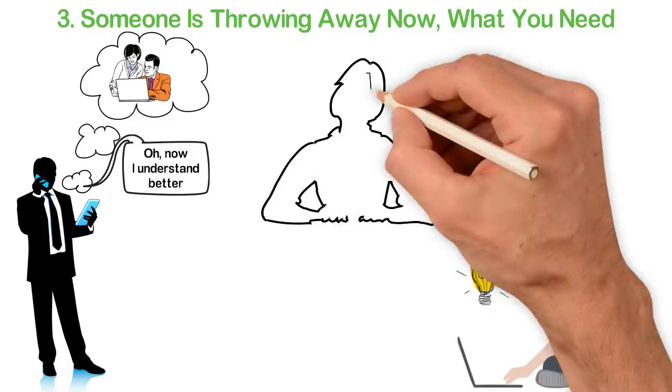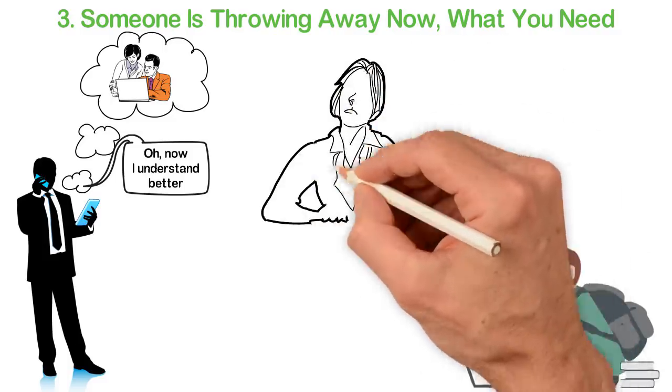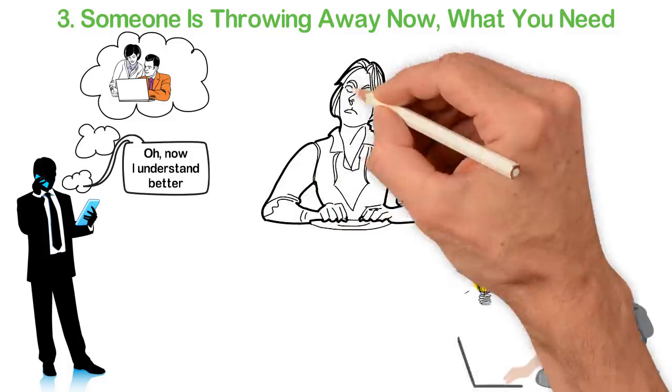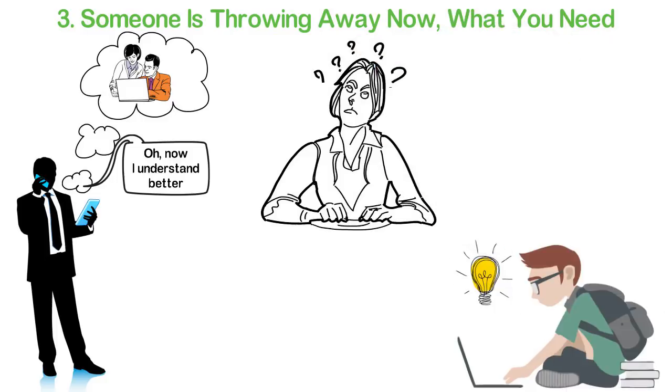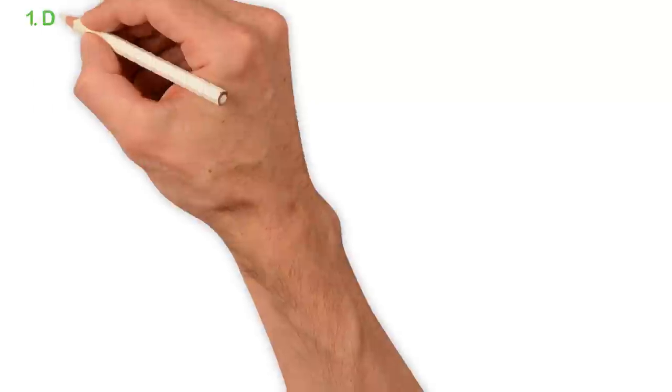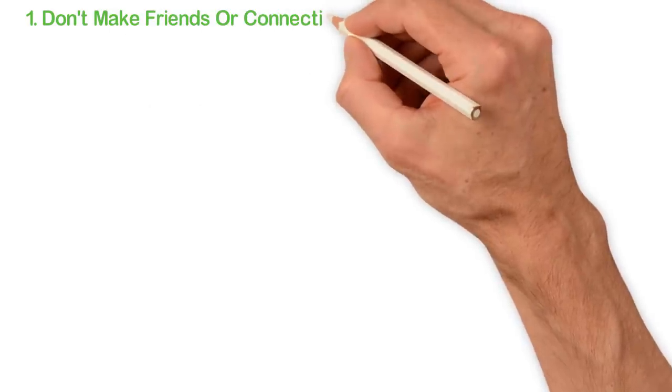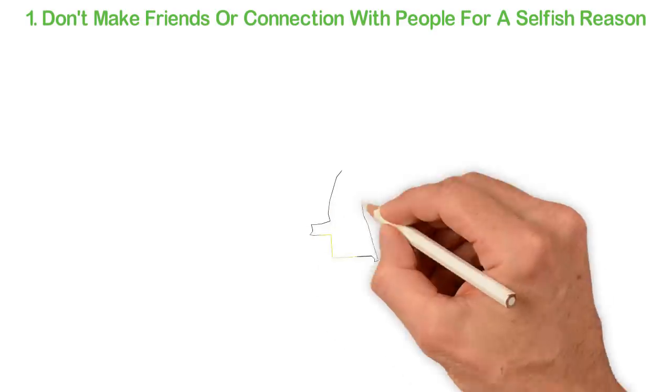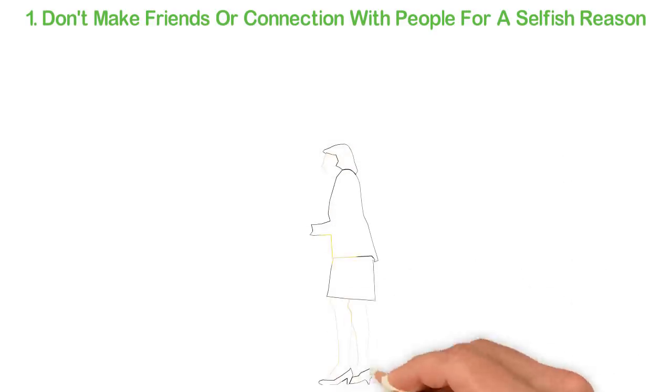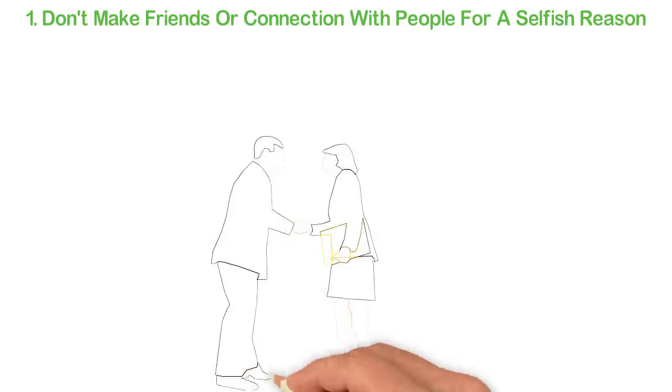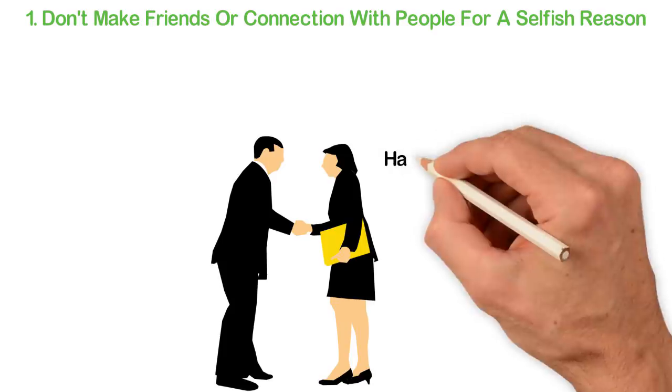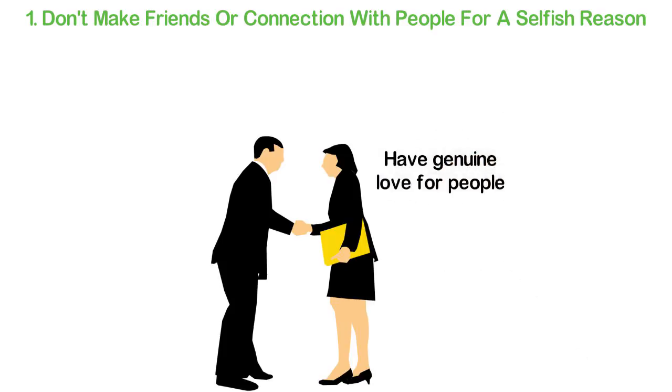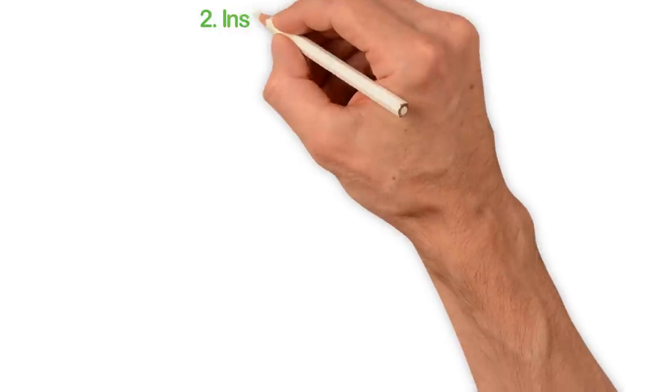Now, if I have convinced you that the number one skill you should have is the ability to connect with positive minded people, how exactly are you supposed to do that? 1. Don't make friends or connection with people for selfish reasons. No one loves to be used. So when you try to connect with people, don't do it primarily because you want to get something from them. Instead, have genuine love for people.